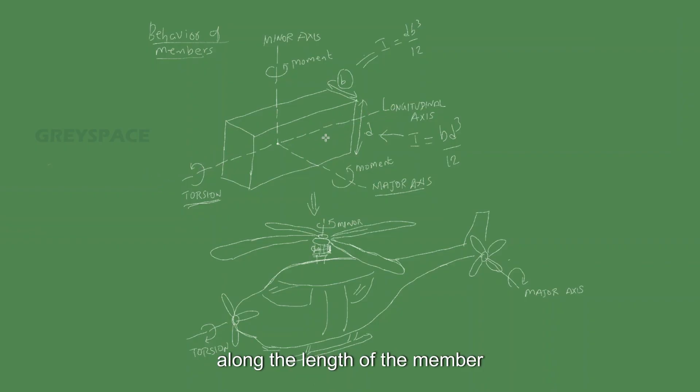The third axis is longitudinal axis, which is running along the length of the member. About which if any member bends, that is torsion. These three bending moments about an axis can be...